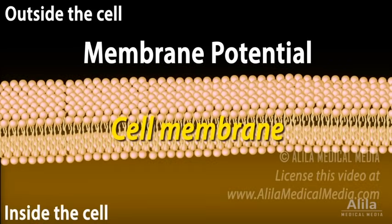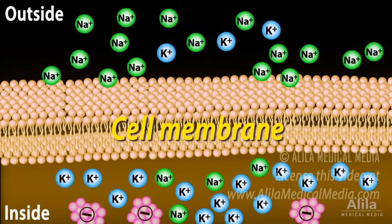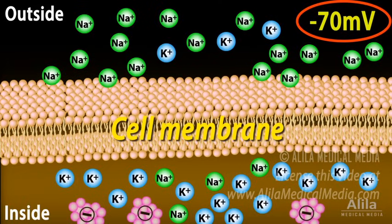Membrane potential, or membrane voltage, refers to the difference of electric charges across a cell membrane. Most cells have a negative transmembrane potential. Because membrane potential is defined relative to the exterior of the cell, the negative sign means the cell has more negative charges on the inside.